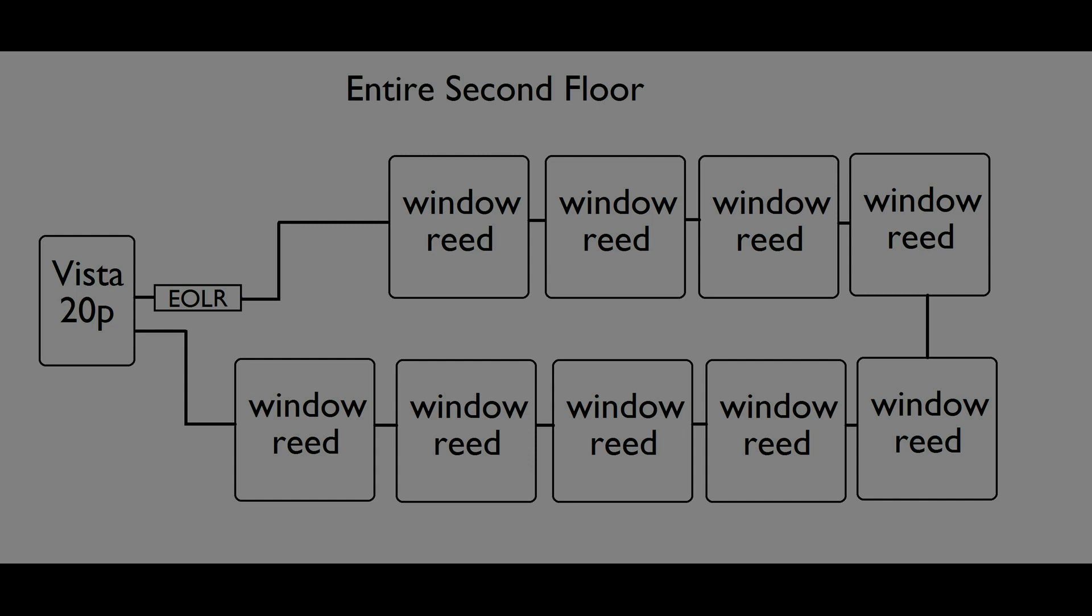You could use one loop to protect every single window on your second floor. And it would work, as long as the total loop resistance outside of the end of loop resistor doesn't exceed 300 ohms. Granted, this is a bad design, but it's much better than having no protection at all.